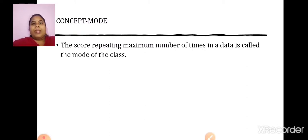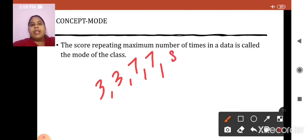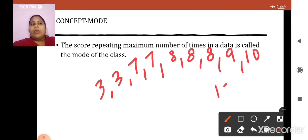The score repeating the maximum number of times in a data is called the Mode of the data. Suppose I give you an example: 3, 3, 7, 7, 8, 8, 8, 9, 10, 12. These are the observations.